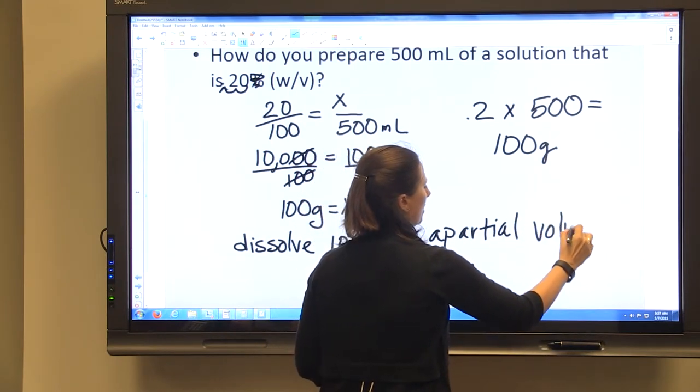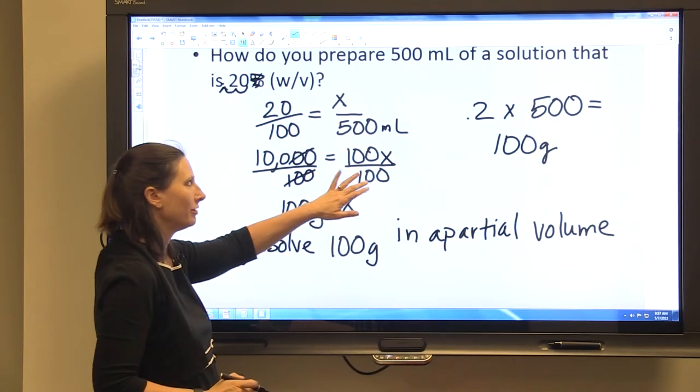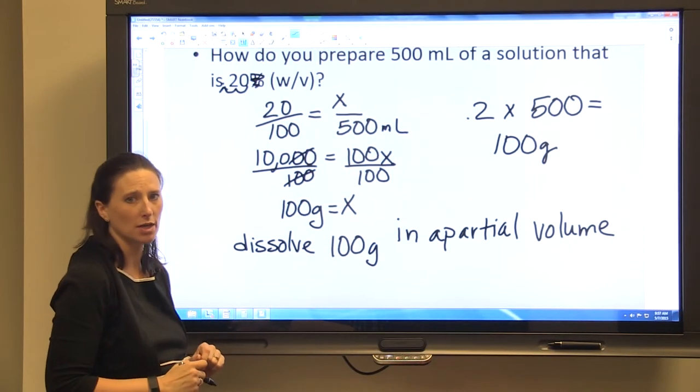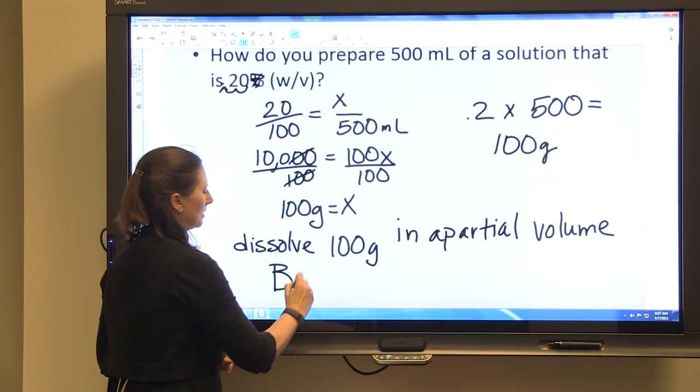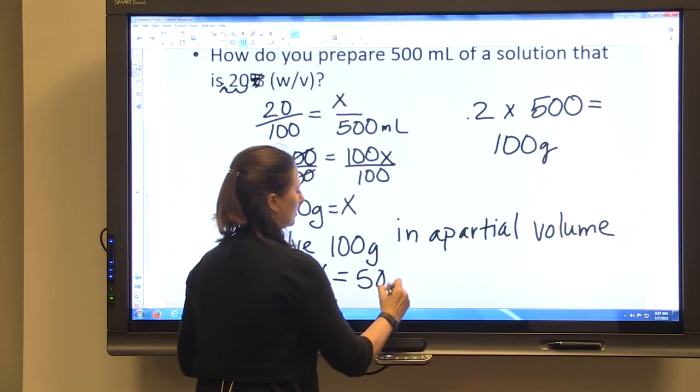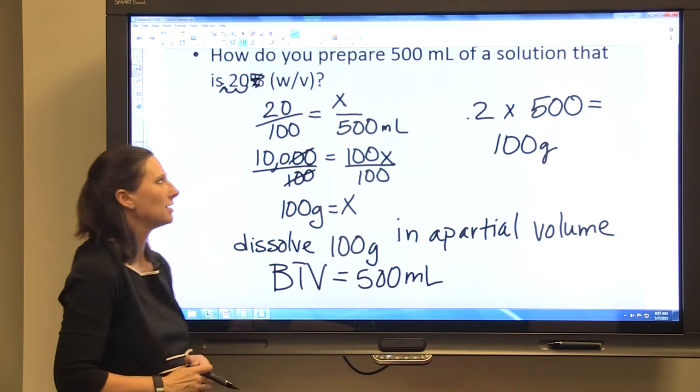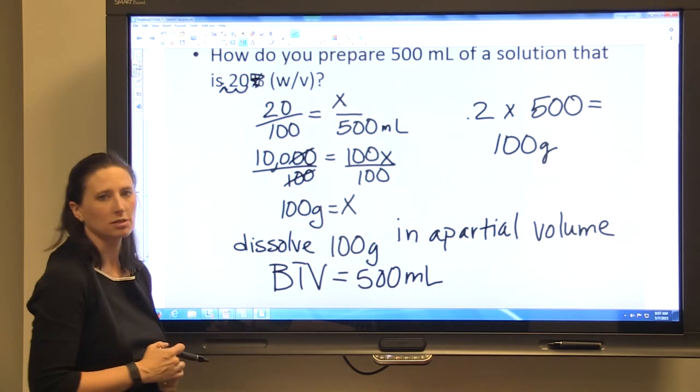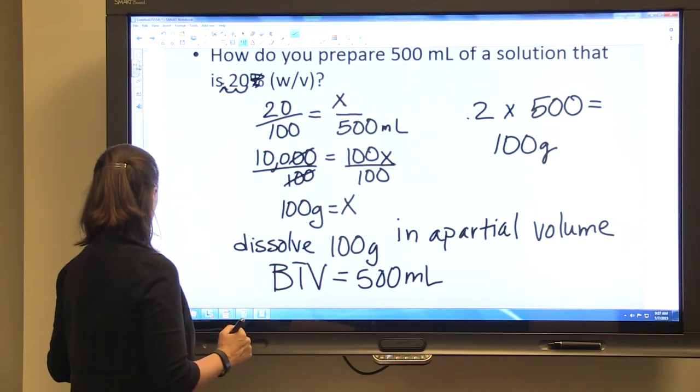And so what you want to do is then dissolve 100 grams in a partial volume. So maybe you take 250 mLs, dissolve that 100 grams in 250 mLs, and then bring to volume equal to 500 mLs. So then you continue to add water until you hit 500 mLs, and you'll have a solution that's 500 mLs of a 20% weight to volume.